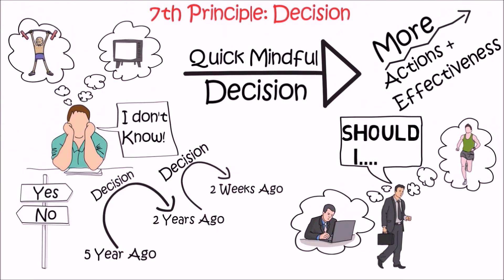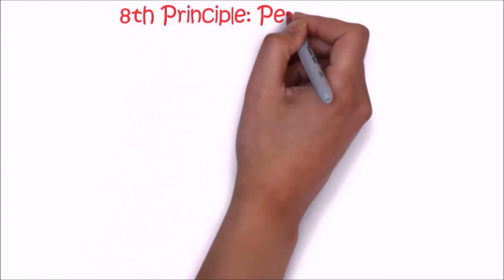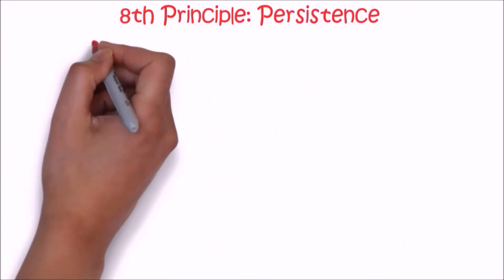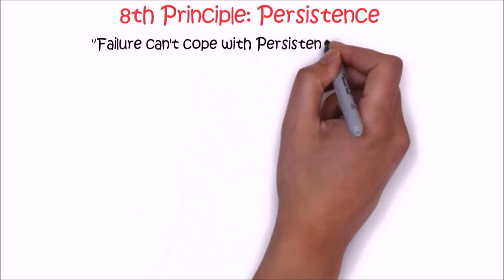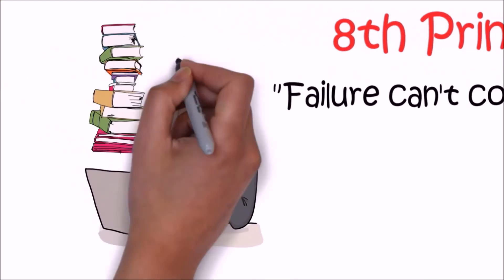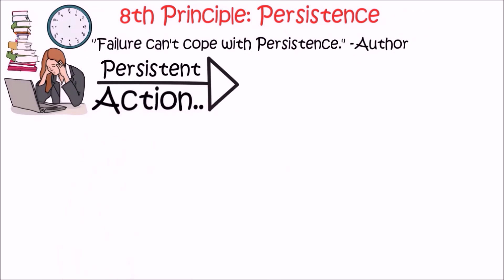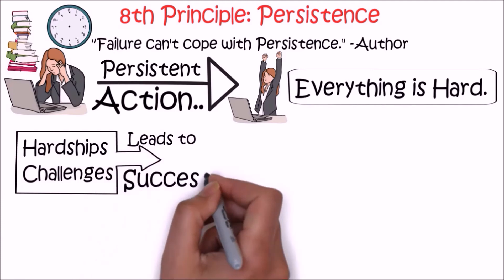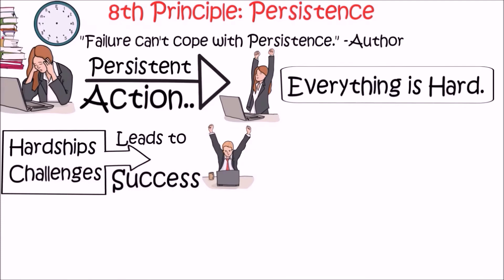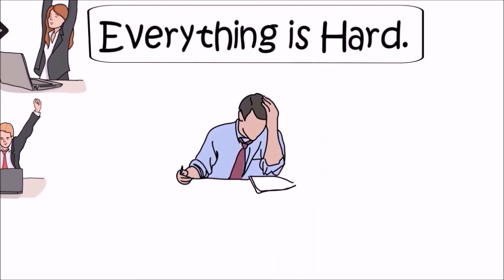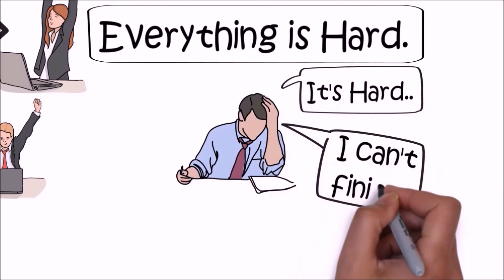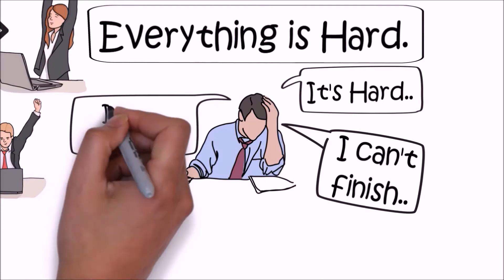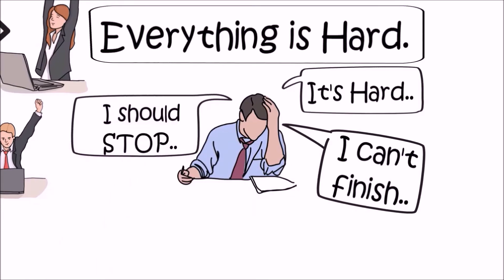The eighth principle is persistence. The author says failure cannot cope with persistence. Persistent action leads to the results one is hoping for. It's true, nothing worthwhile in life comes easy. It needs struggle. You have to overcome hardships and challenges. For most people, this is the point where they put the brake on their action and stop doing what they are doing. This is where the habit of finishing what one starts comes into place. With persistence, practice, and effort, we can make things happen no matter how tough it is.